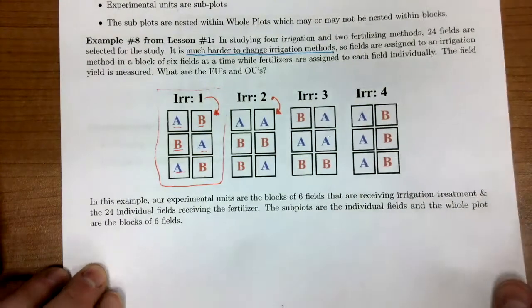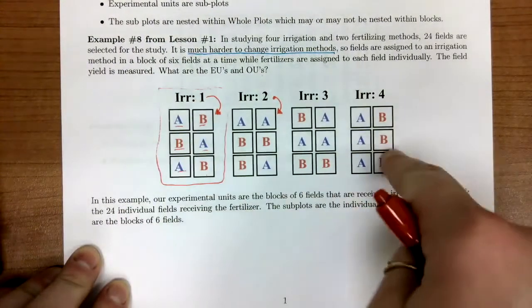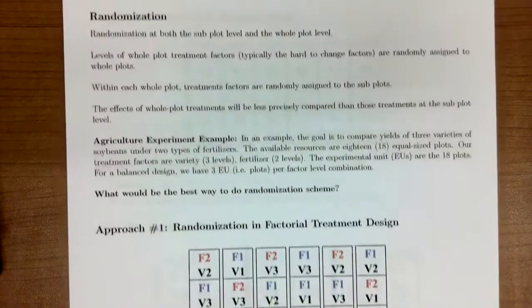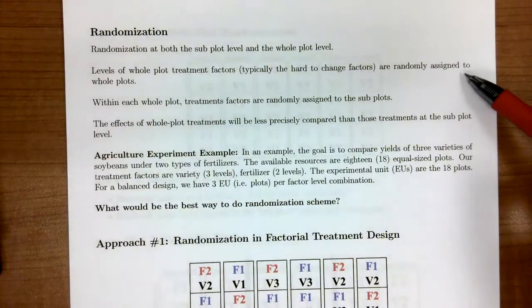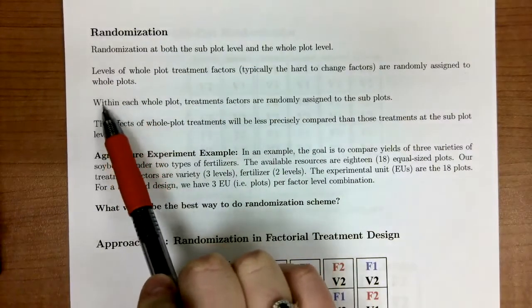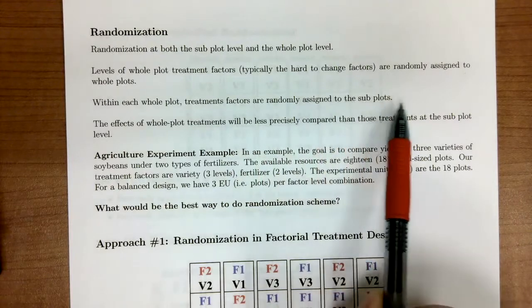Now let's talk about how we randomize this example for a split plot design. For split plot randomization, we need to randomize at both levels. We have a hierarchy of factors where we have the whole plot, which again is the hard to change factor, and then we have a subplot factor which are nested in the whole plot. Typically, we have the whole plot treatment factors which are randomly assigned to our whole plots. And then within each whole plot, we have treatment factors that are randomly assigned to the subplots.